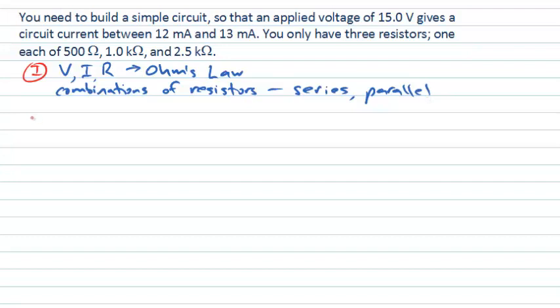Now let's move on to our development stage in our solution. We actually might need to do a little bit of a calculation to get a feel for where we're going in the problem. We have enough information to think about what resistance range we might need to produce this current range, and we'll use Ohm's law — resistance is the ratio of voltage to current.